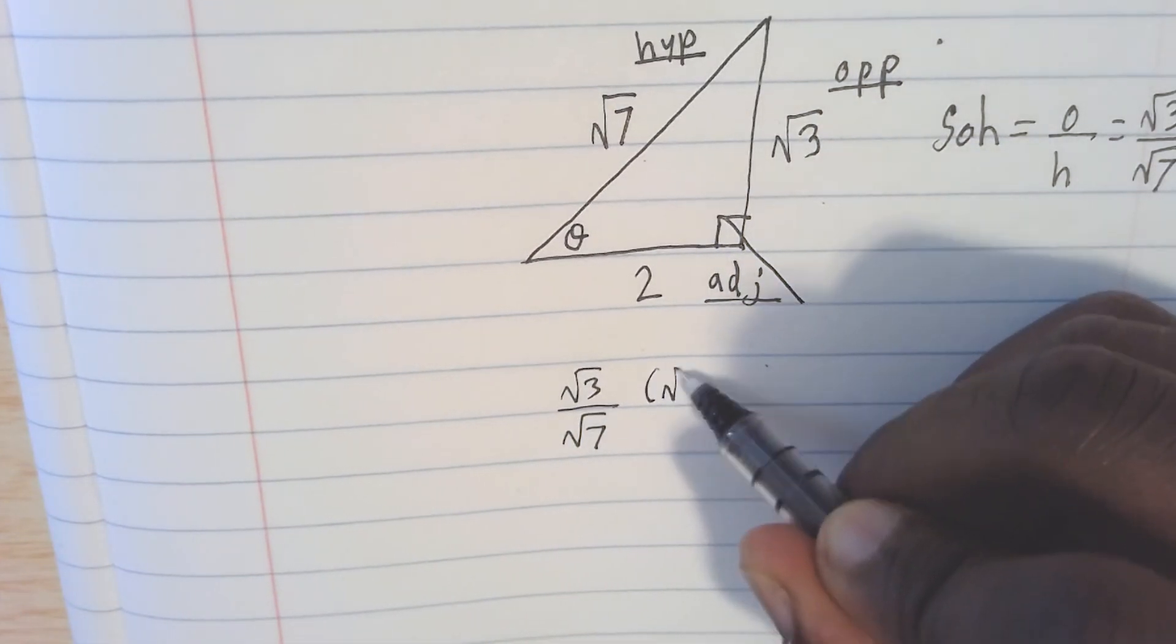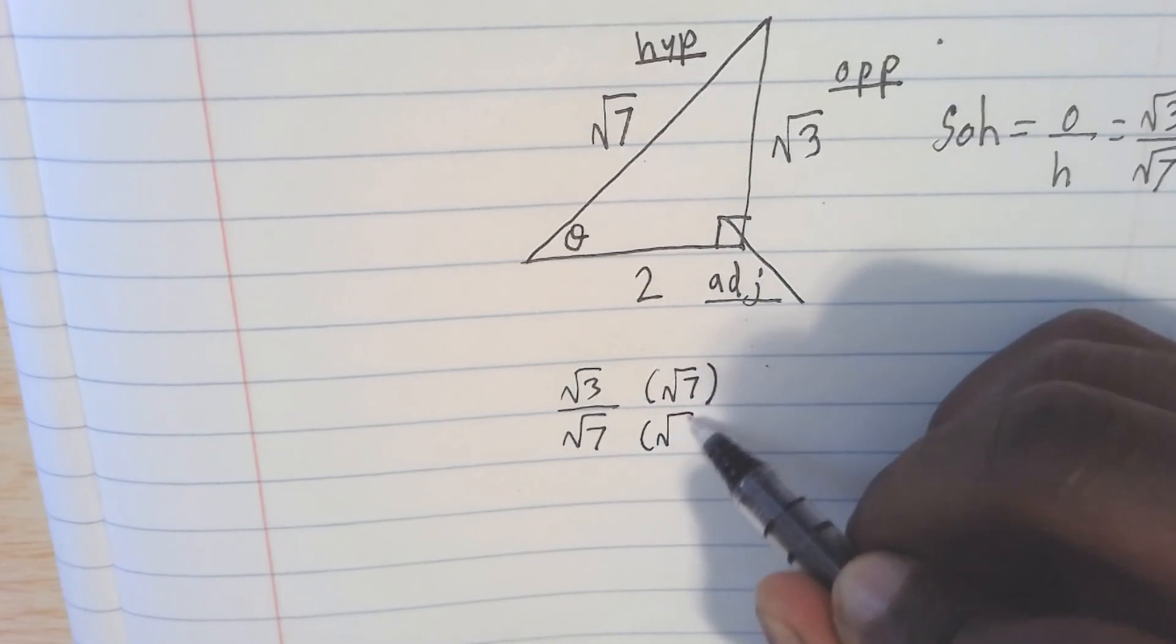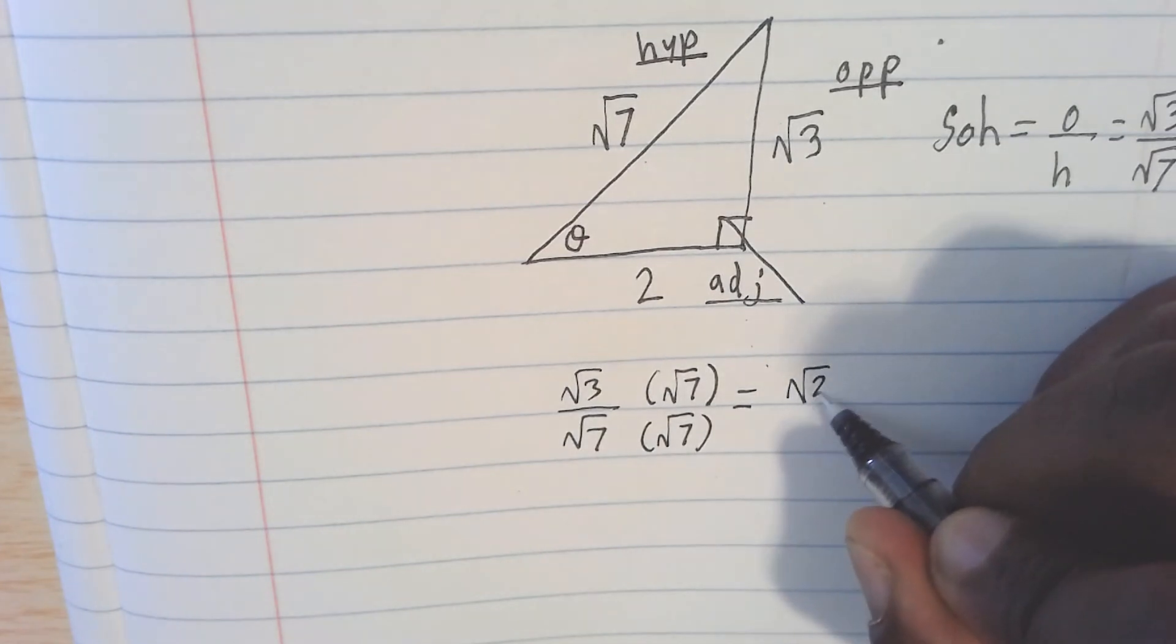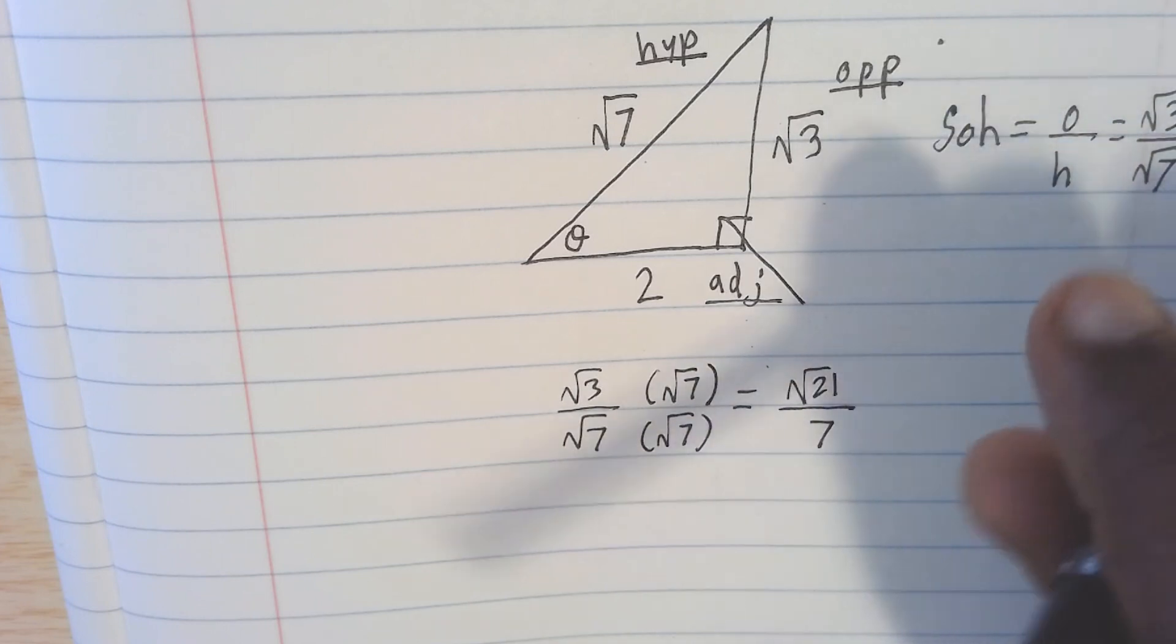Okay, I'm gonna multiply a radical 7 on the top and the bottom. Radical 21 over 7. I think I'm done with this problem. I think I'm done with this problem. I'm not done with this problem.